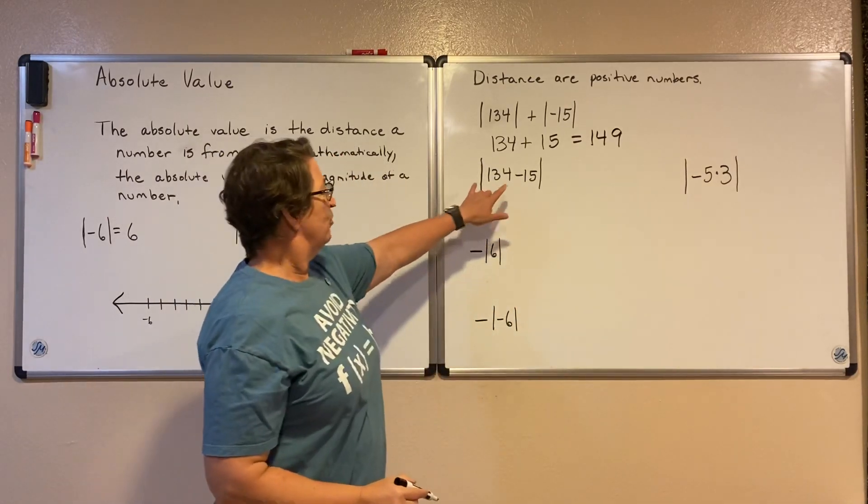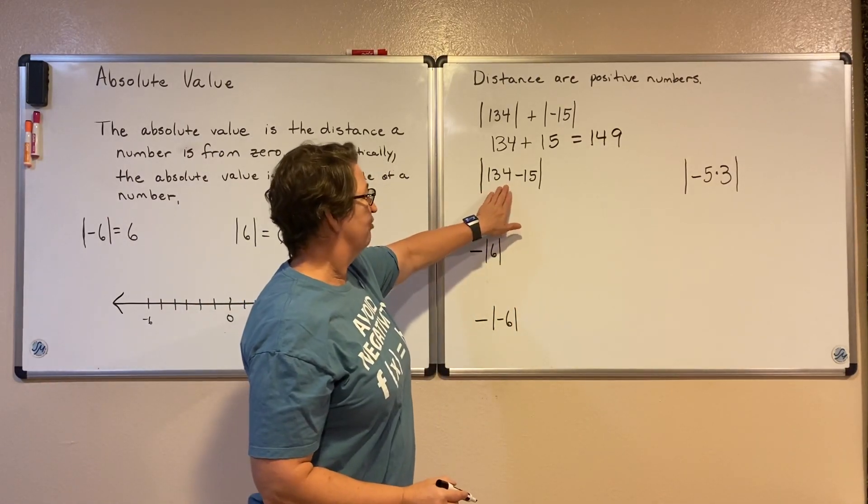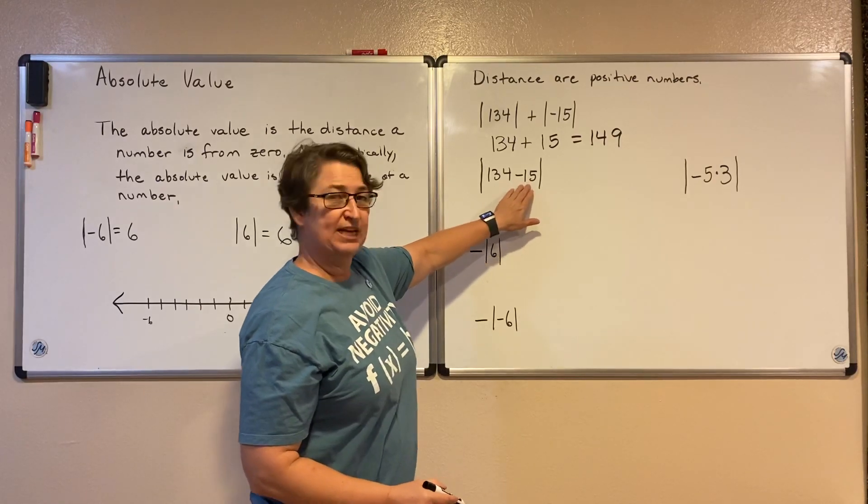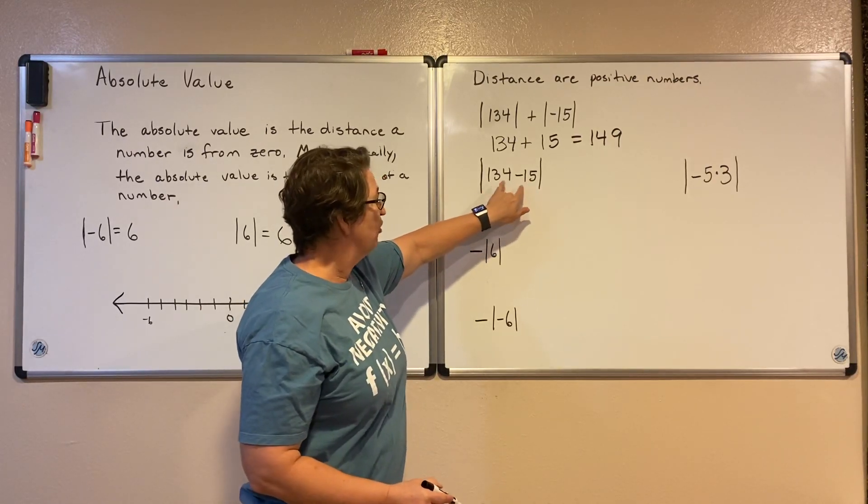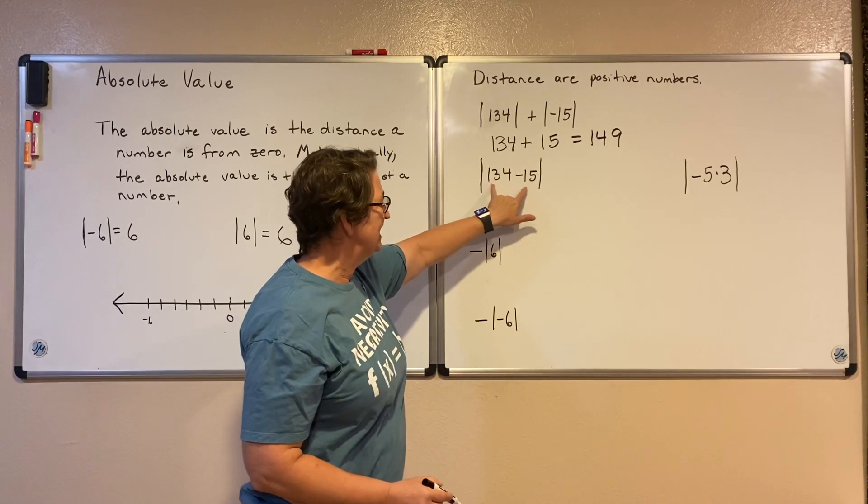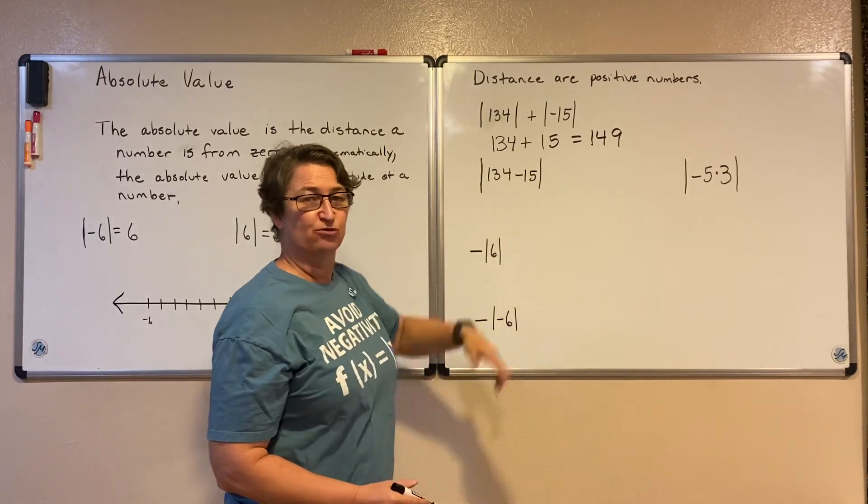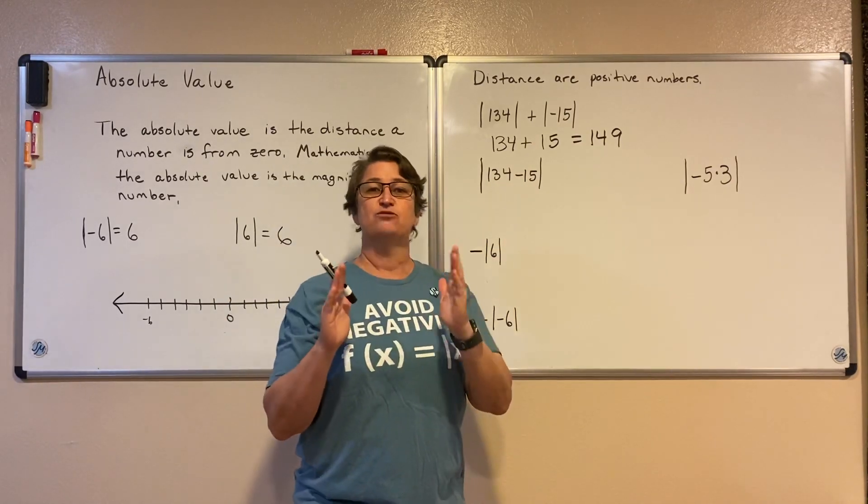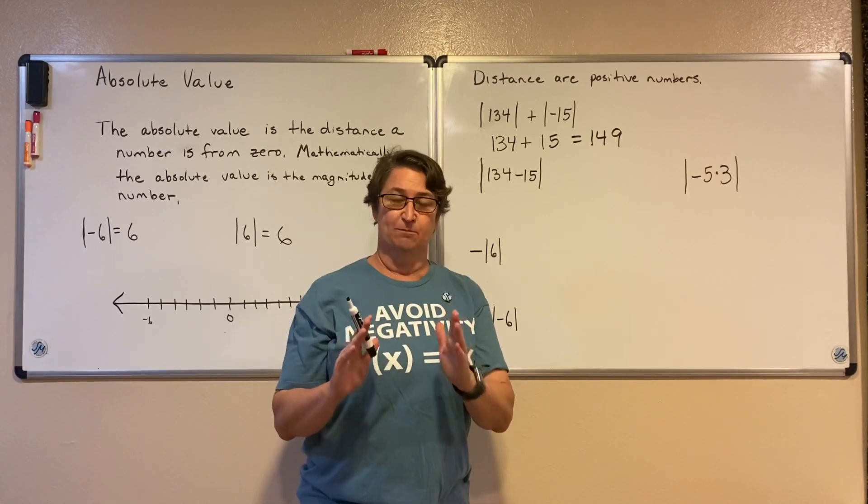Here we have the absolute value of 134 minus 15. This time the 134 minus 15 is inside that absolute value sign. The absolute value sign works as a grouping symbol.